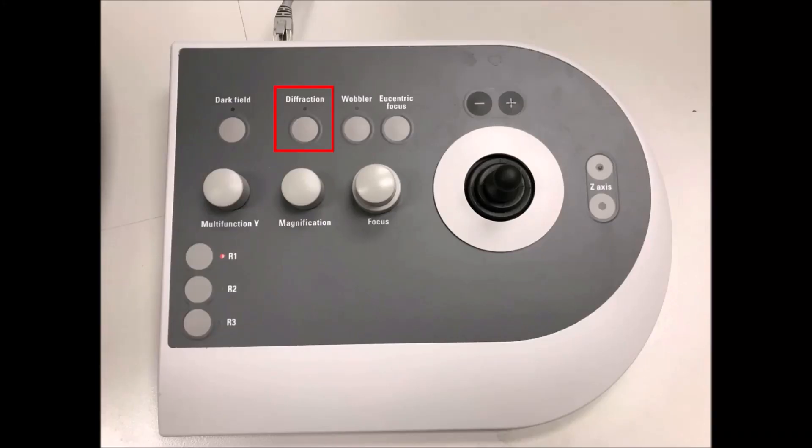So how is zone axis alignment performed? Well, for starters, you have to be in diffraction mode. So that's the first thing, hit that diffraction button on your right-hand panel.